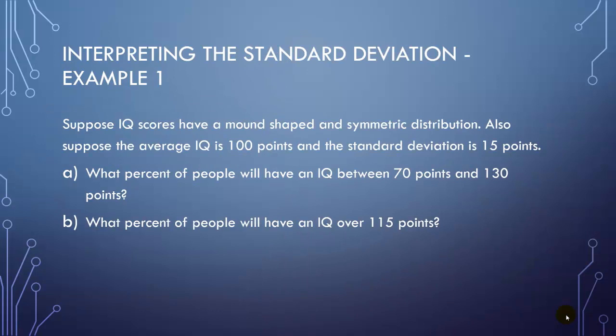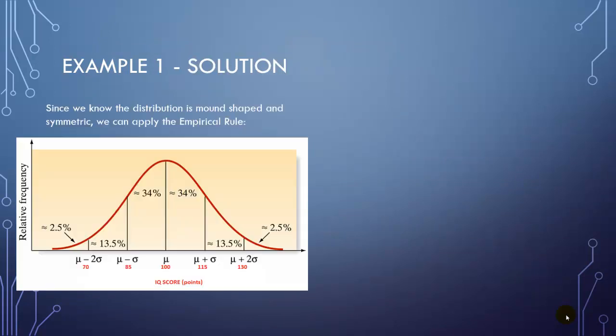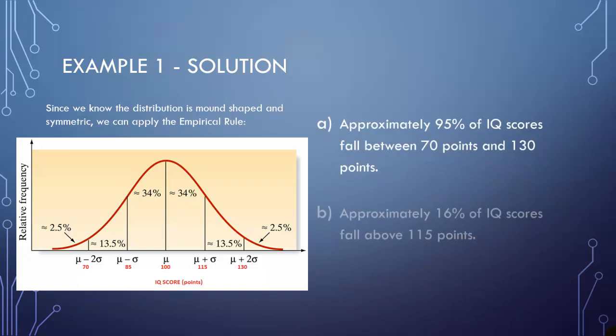All right, going back to the second question, what percent of people will have IQs over 115 points? So looking at our graph again, 115 points is on the right over there, right over here. And we see 13.5% fall between one and two standard deviations, and an extra 2.5% fall to the right of two standard deviations from the mean. So adding those together, we should get 16%. So 16% of IQs fall over 115.